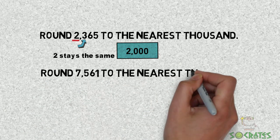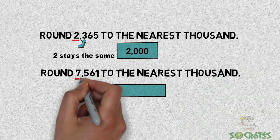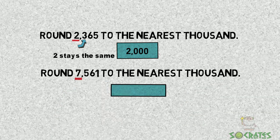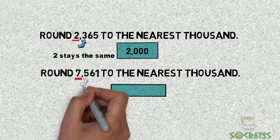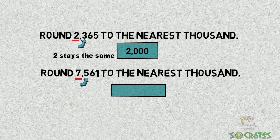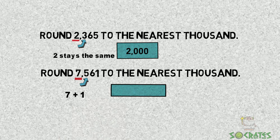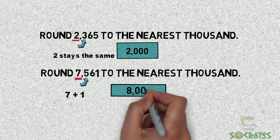Round seven thousand five hundred and sixty-one to the nearest thousand. We mark our place with the seven. Then we look next door at the five. Five is greater so we need seven plus one more is eight and then thousand.